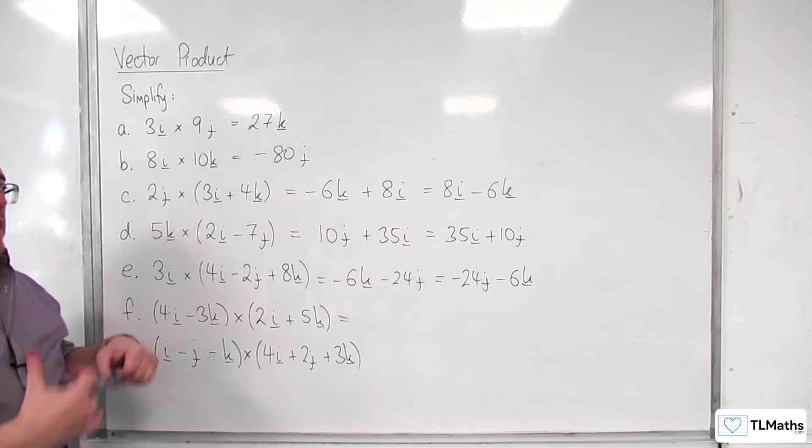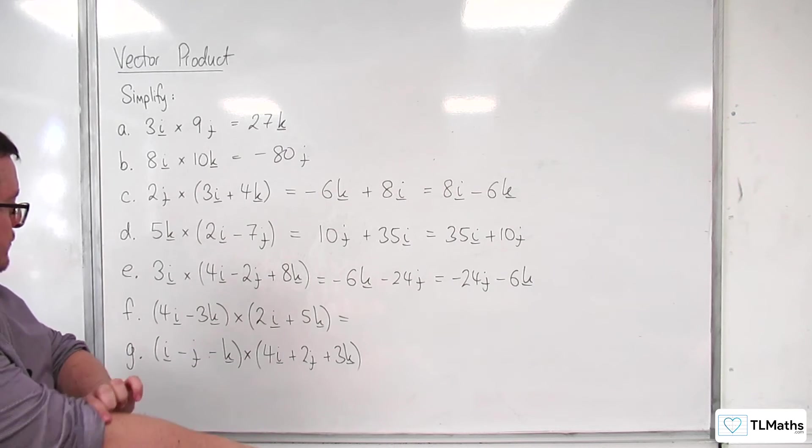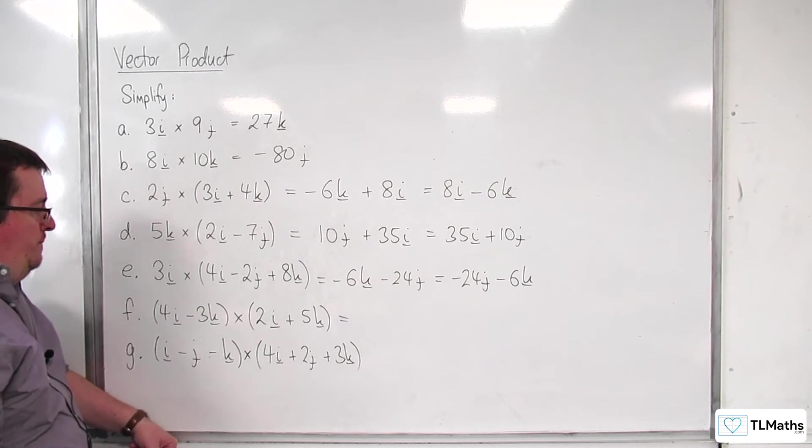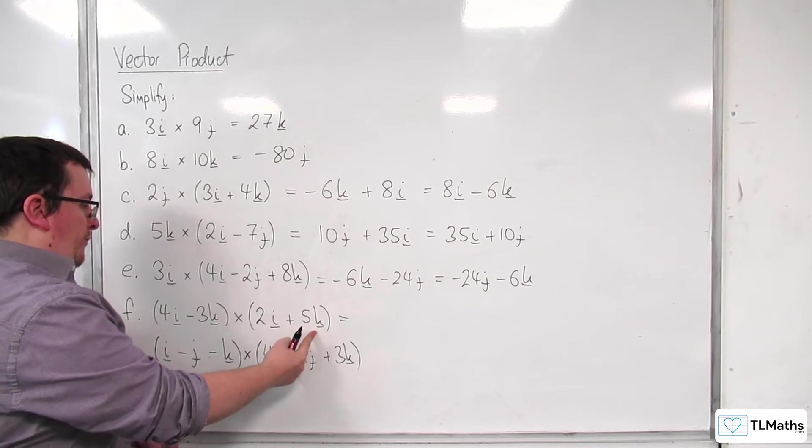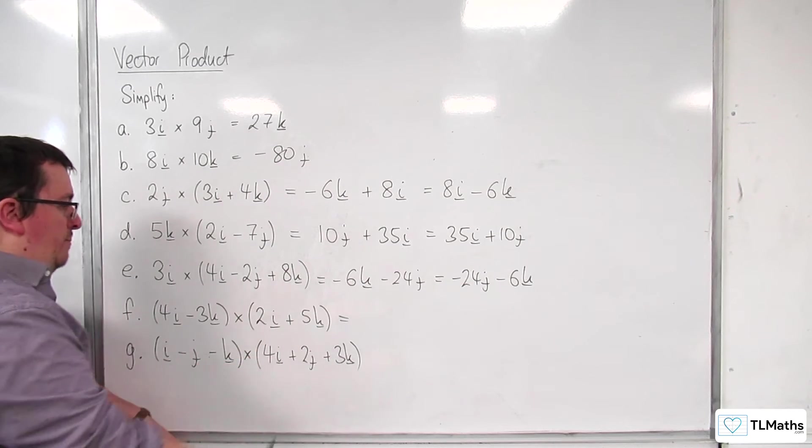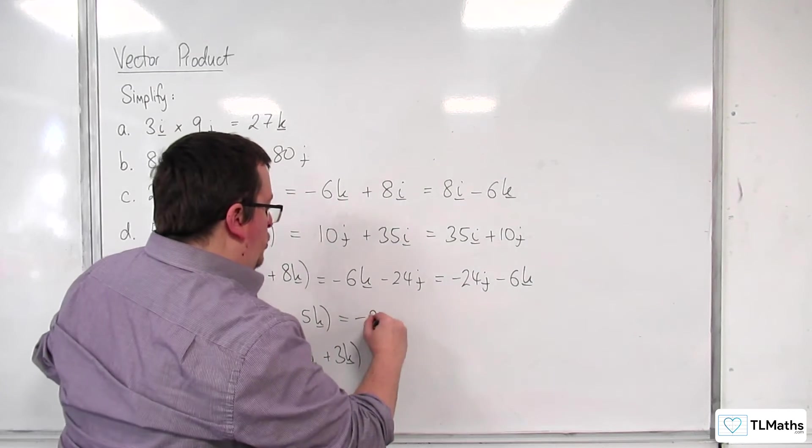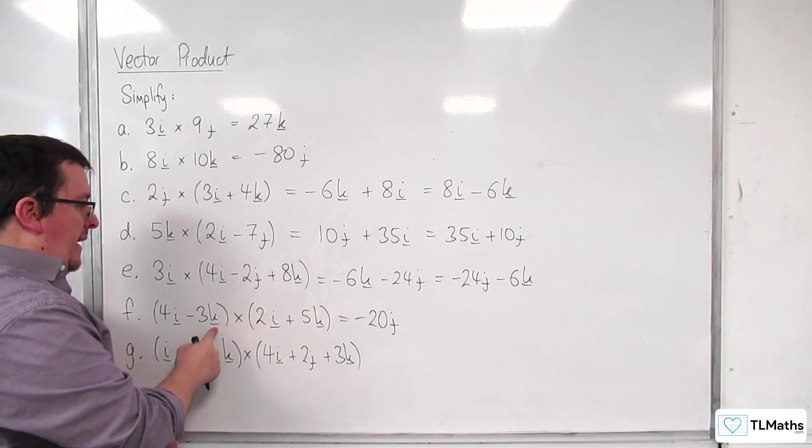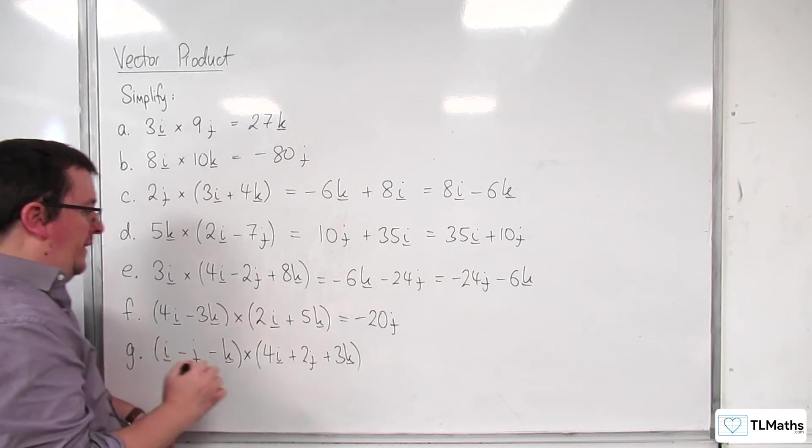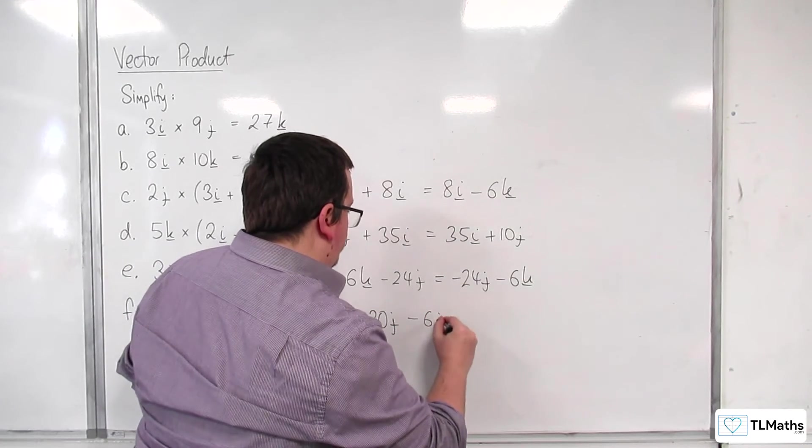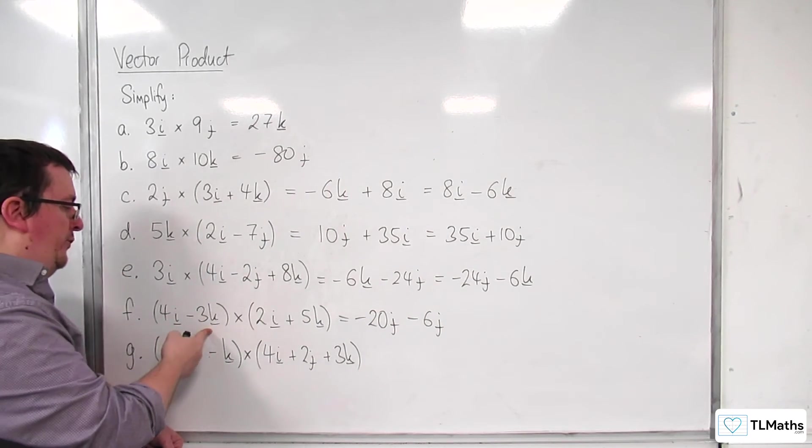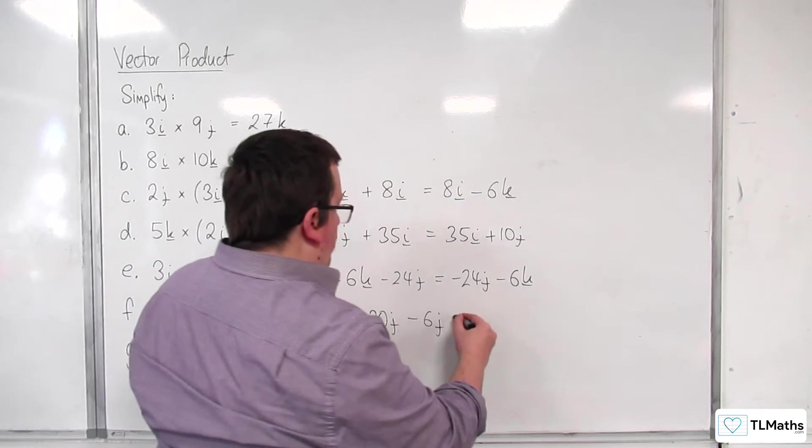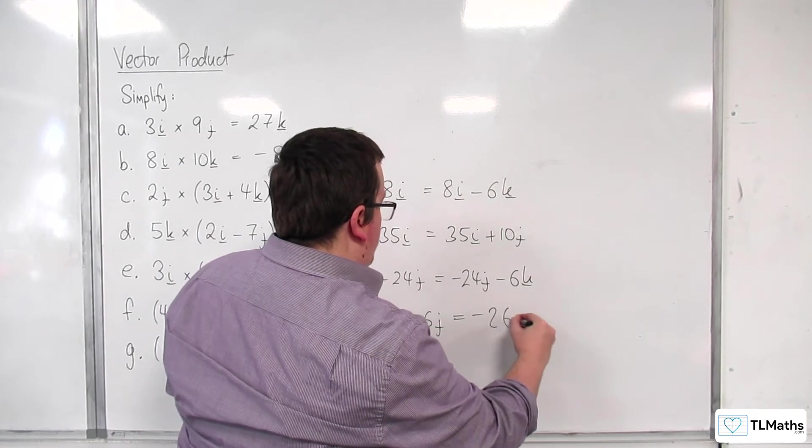So, it starts to feel like just expanding brackets. Right. So, here we're going to get 4i cross with 2i. Zero. 4i cross with 5k. i cross k is minus j. So, we're going to get minus 20j. We've got minus 3k cross with 2i. k cross i is j. So, minus 6j. And now, we've got minus 3k cross with 5k. Well, that's zero because they're parallel. So, we've got minus 26j.